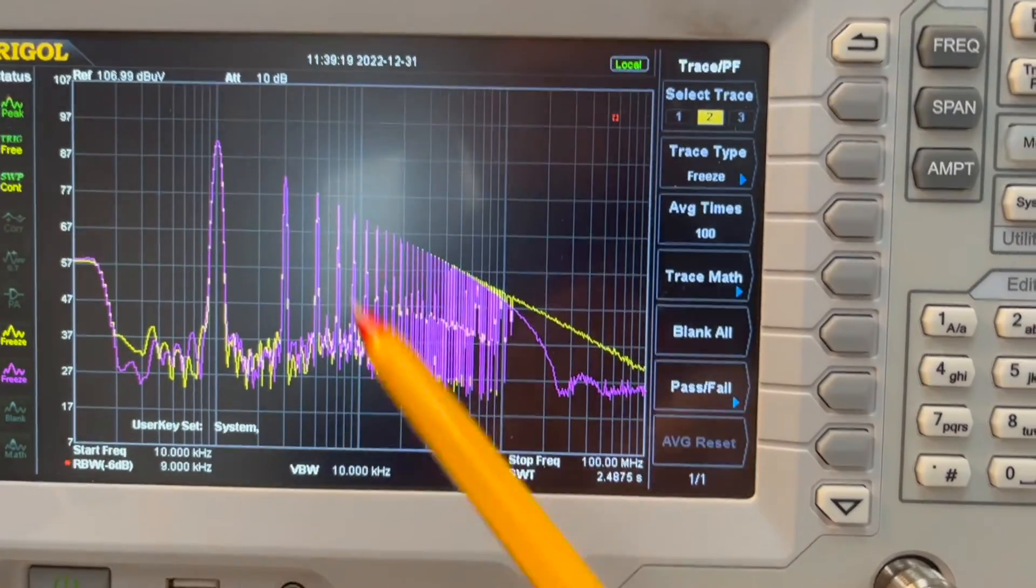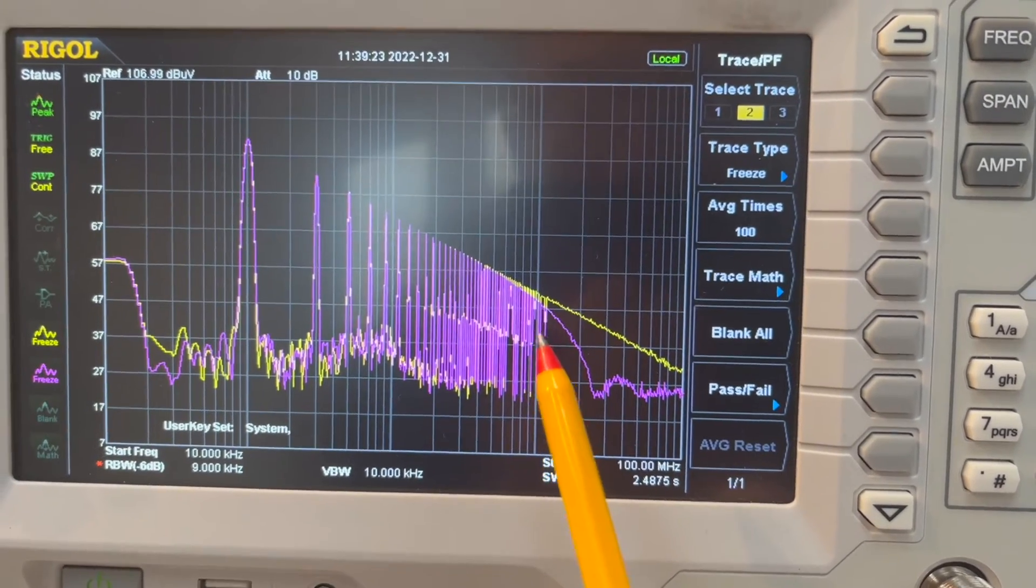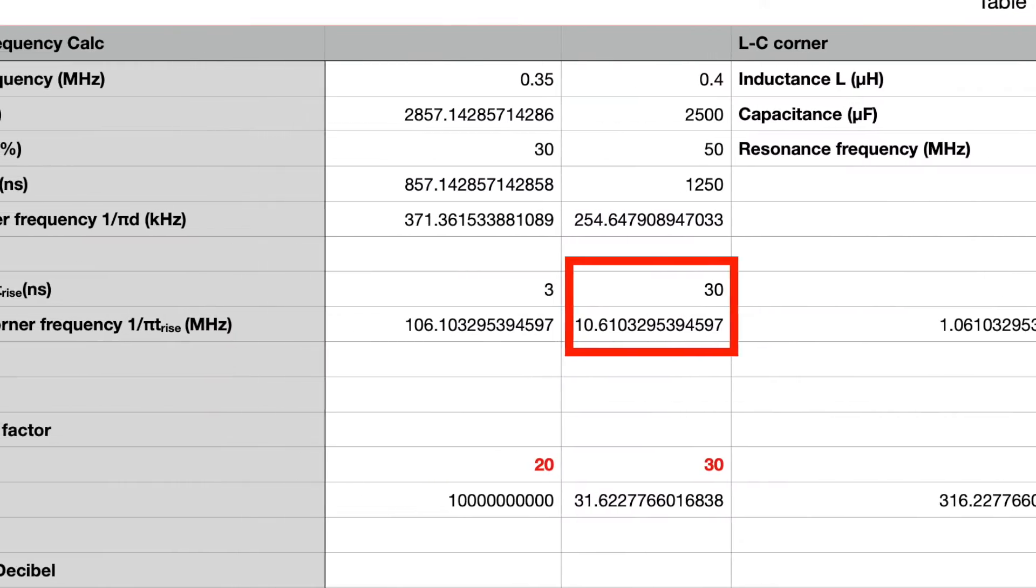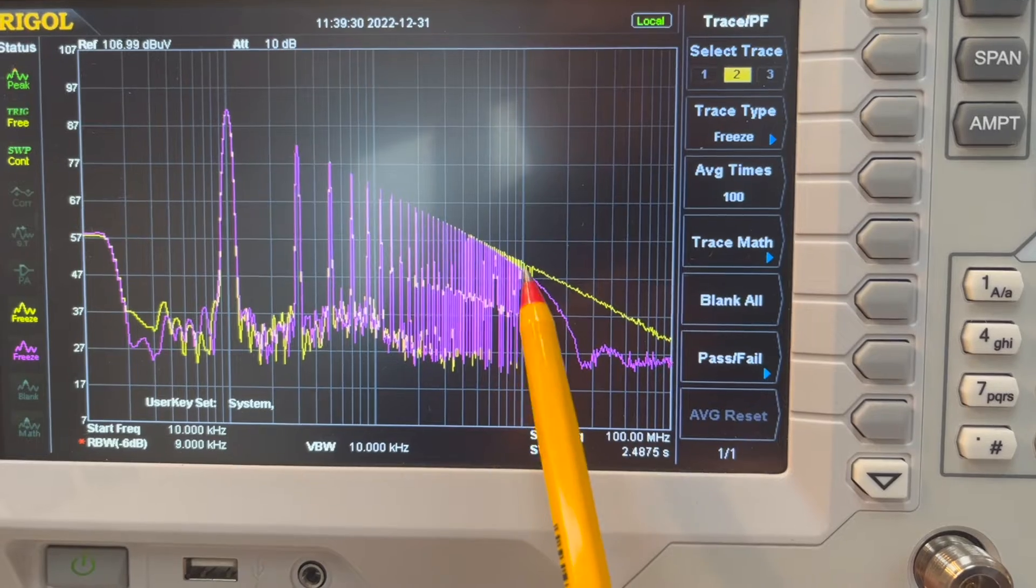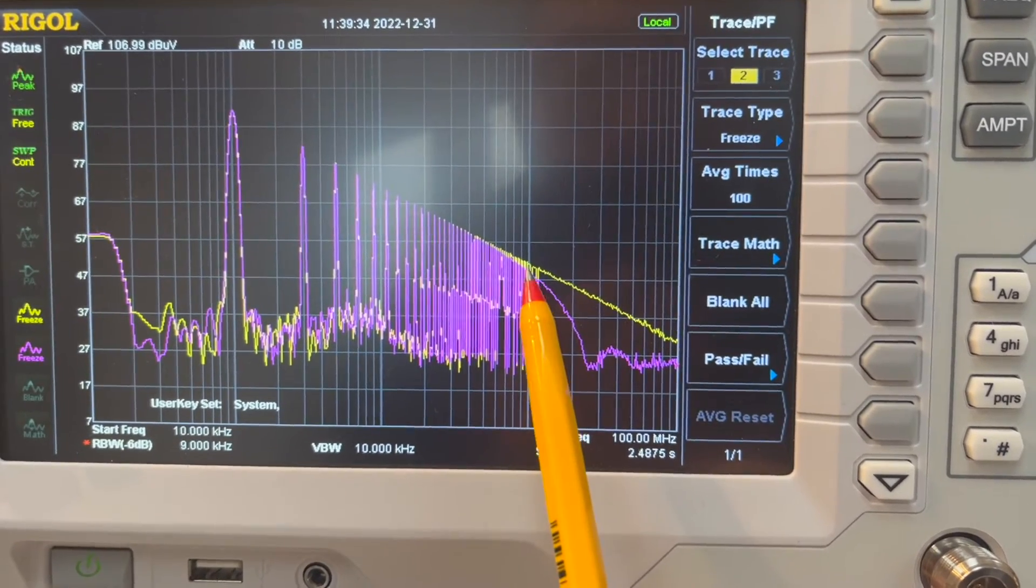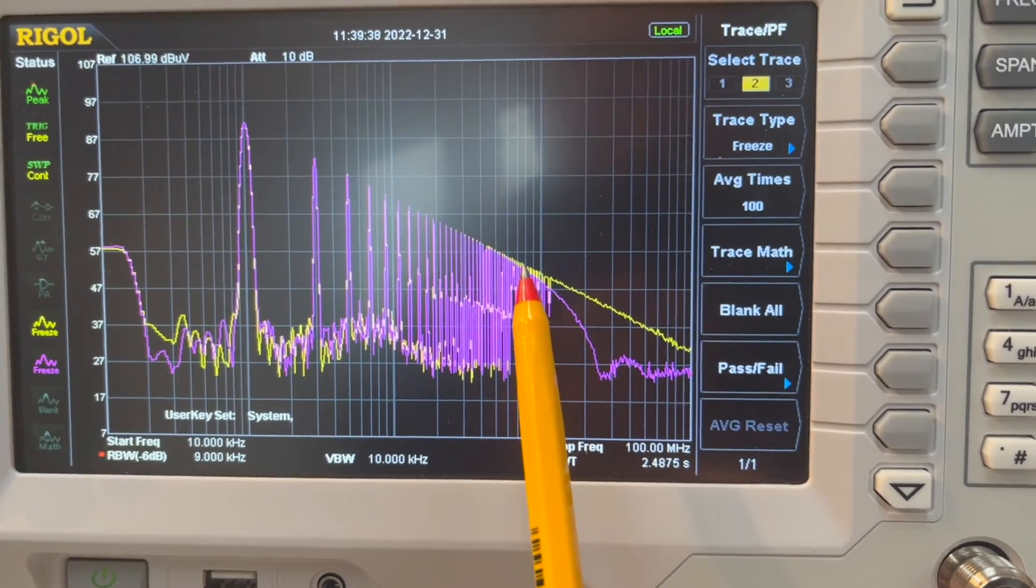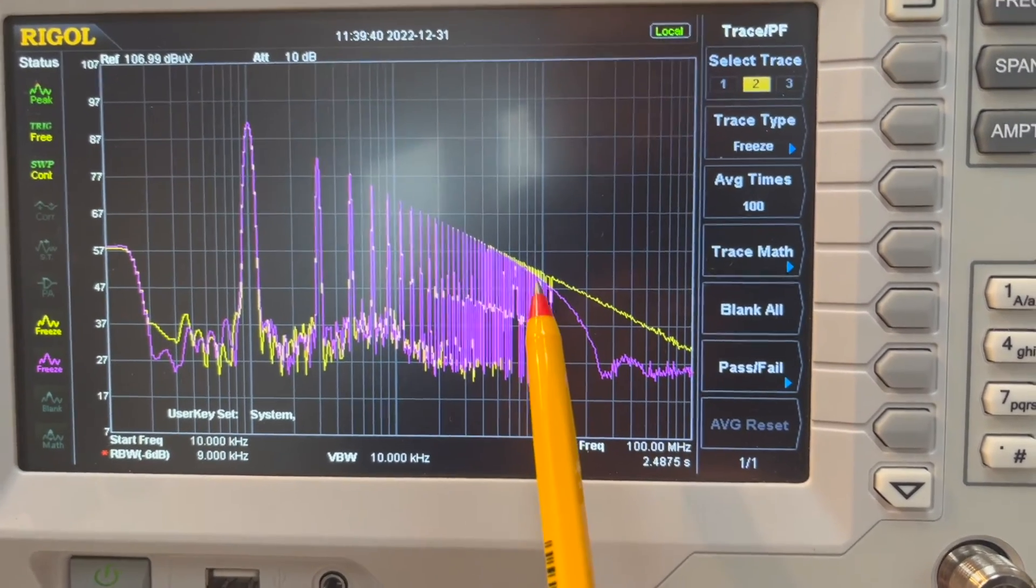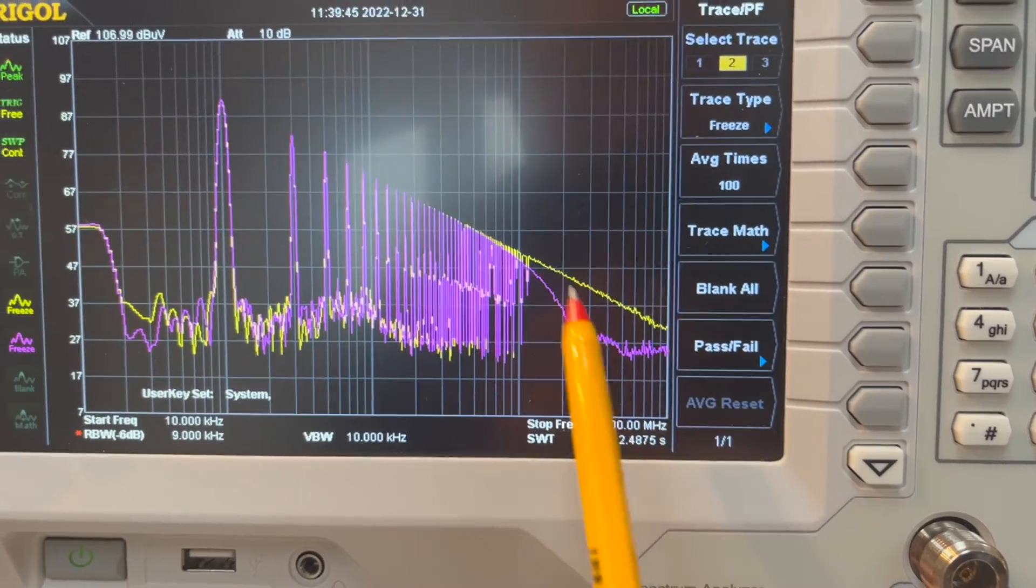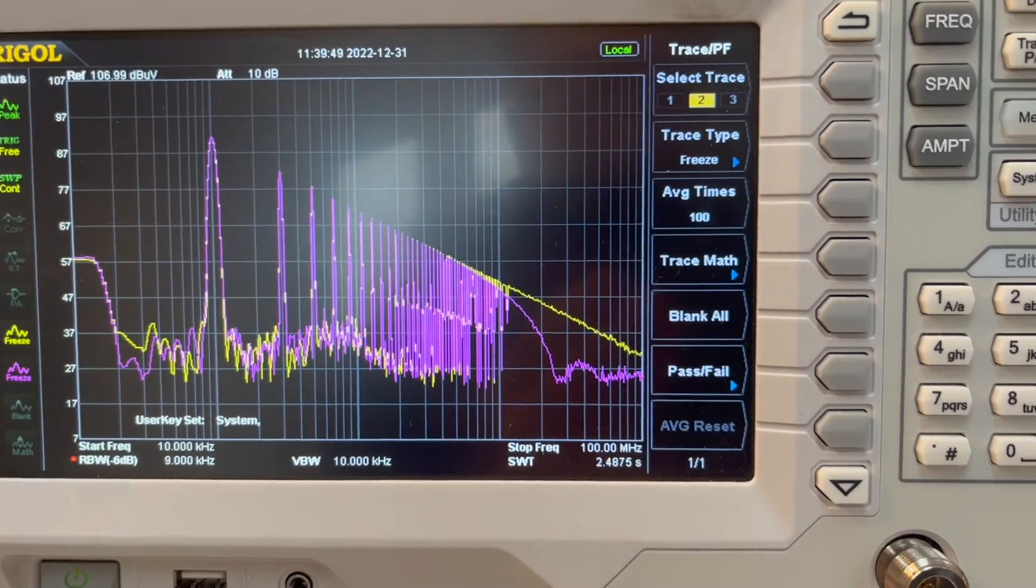As you can see, according to our calculation, when you have 30 nanoseconds rise time, the 40 dB per decade rollout really starts from 10 megahertz. And that's exactly what we have seen here. So before 10 megahertz, the performance is pretty much the same. But after 10 megahertz, we got this 40 dB per decade rollout, which means here you have less problems to worry about once you increase the rise time.